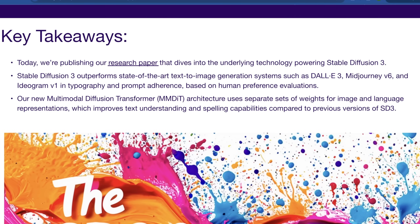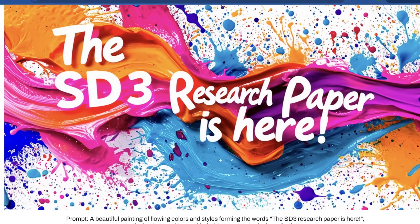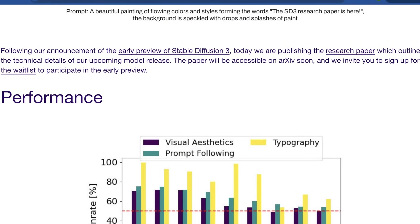They go on to say that their new multimodal diffusion transformer, or MMDIT, uses separate sets of weights for image and language representations, which improves text understanding and spelling capabilities compared to previous versions of Stable Diffusion. Text improvement has been a kind of slow-burning underlying improvement in this industry, so it's cool to finally see a novel approach that has actually worked. Stable Diffusion 3 now has dedicated typography encoders and transformers, which is pretty interesting.